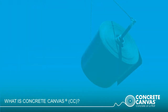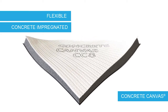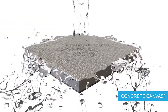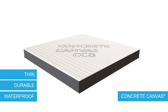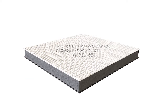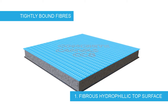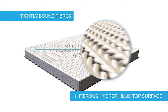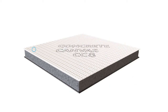So, what is Concrete Canvas? Concrete Canvas is a flexible fabric filled with a dry cementitious mix that hardens on hydration to form a thin, durable and waterproof concrete layer. The material is composed of four elements. Firstly, a fibrous hydrophilic top surface — tight enough to contain the dry cement powder fill within the CC, reducing dust generation and acting hydrophilically, helping to wick water into the material.